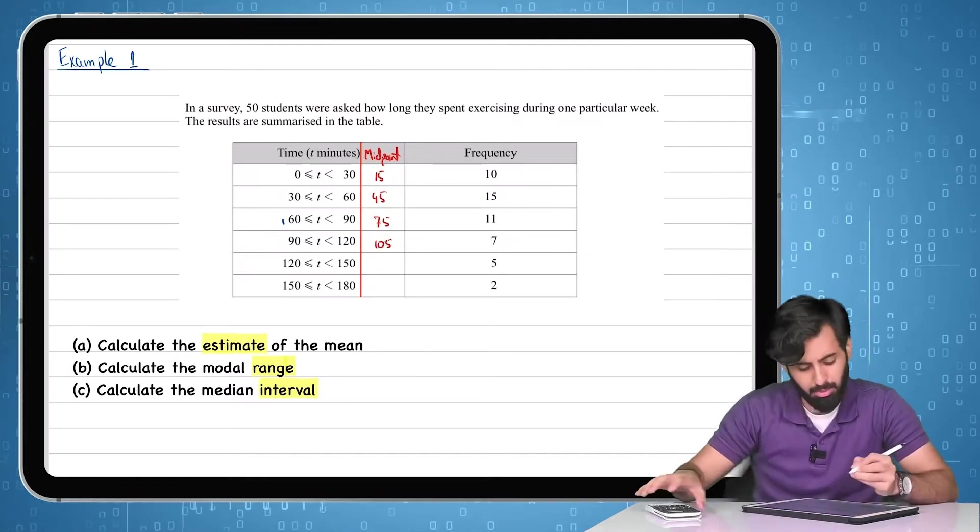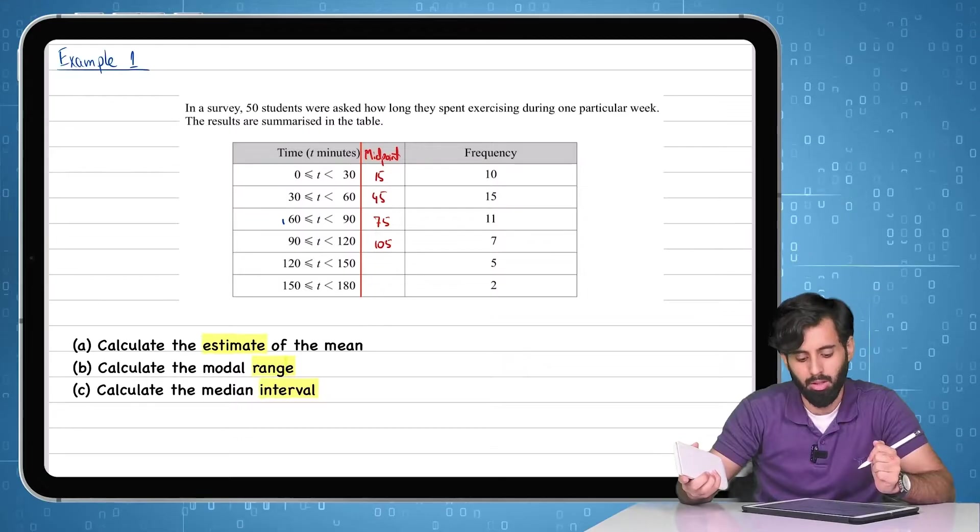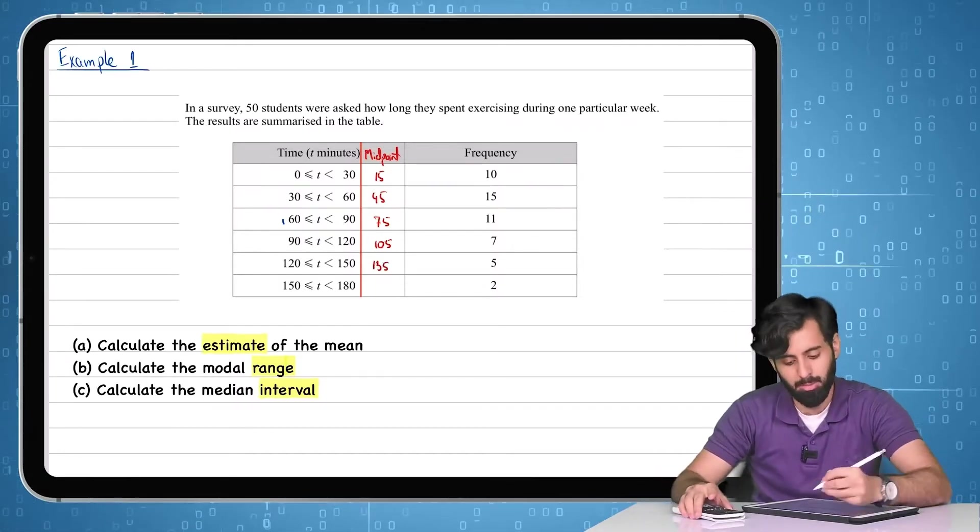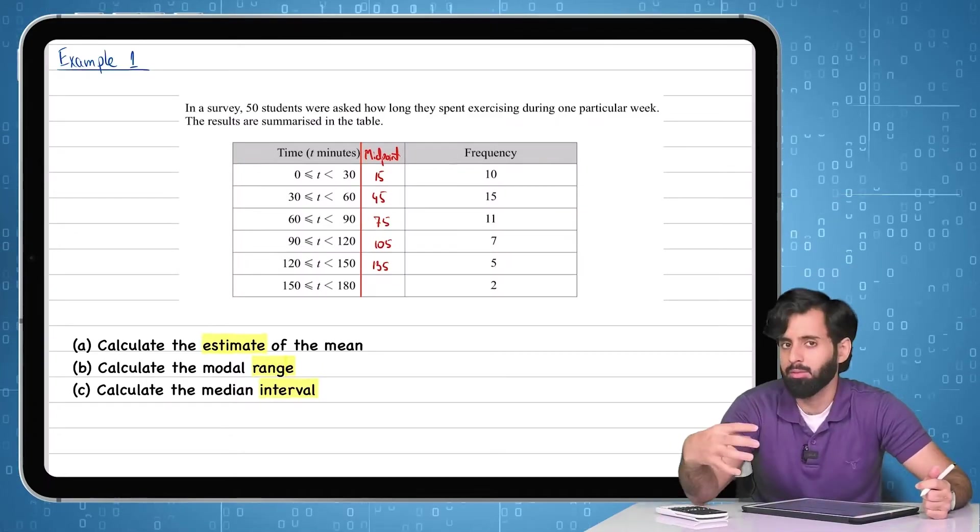90 to 120, the midpoint is going to be 105. 120 to 150 is going to be 135. An easier way to do this is by calculating the difference of every interval. Like for example, 120 and 150, the difference is 30.